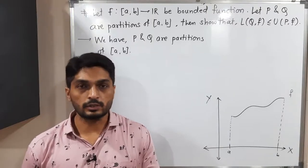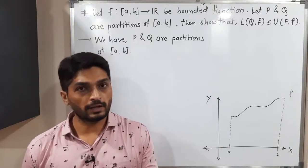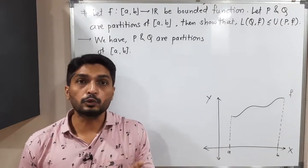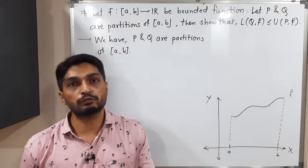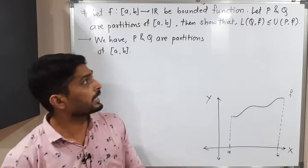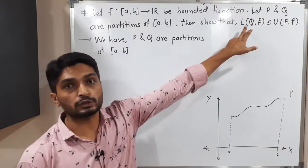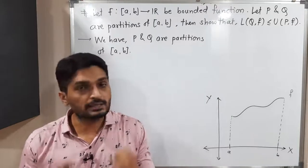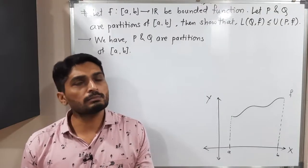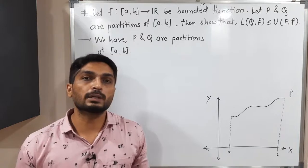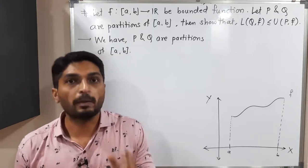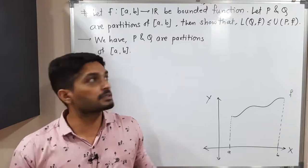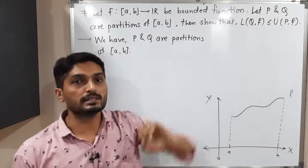Let us discuss this result. We have a function F which is a bounded function defined on a closed interval [a, b], and P and Q are two different partitions of [a, b]. We have to prove that the lower sum with partition Q is less than or equal to the upper sum with partition P — that is, lower sum is always less than or equal to upper sum, irrespective of any partition.